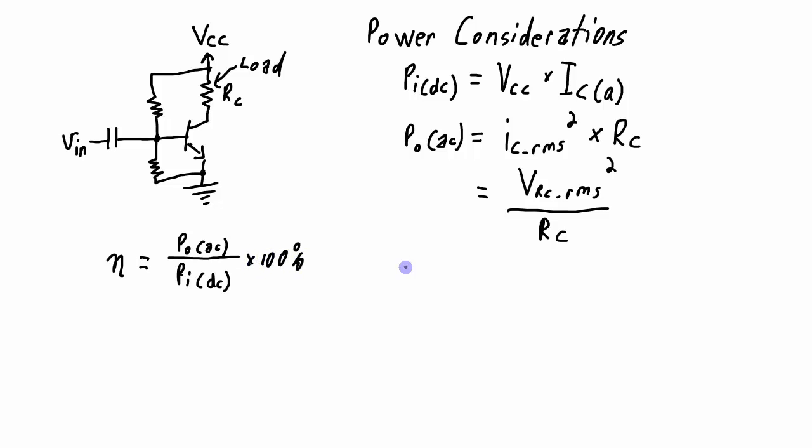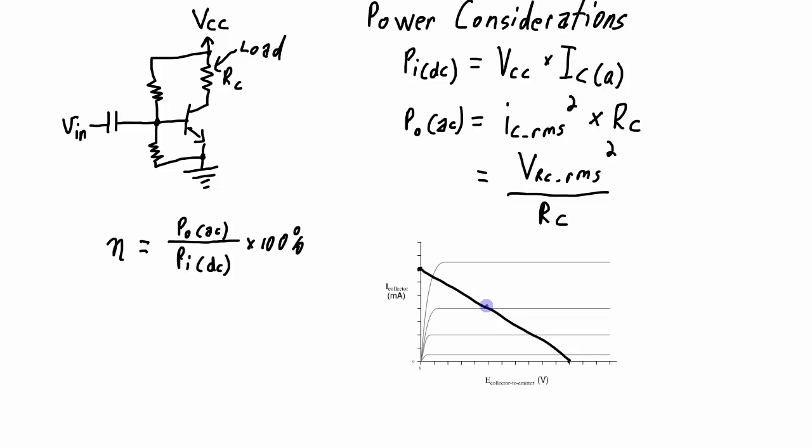I mentioned earlier that the biggest disadvantage of these class A amplifiers is their power efficiency. Well, I want to go through an exercise where I'm going to calculate the maximum power efficiency for the circuit. And then any actual circuit will actually have an efficiency that is less than that. The point where I'm going to have the maximum power input and output is when I'm biased right in the middle of the load line right here.